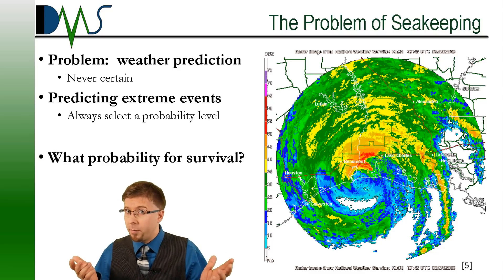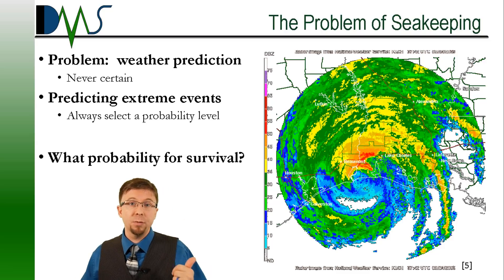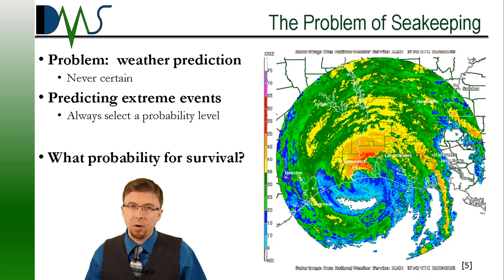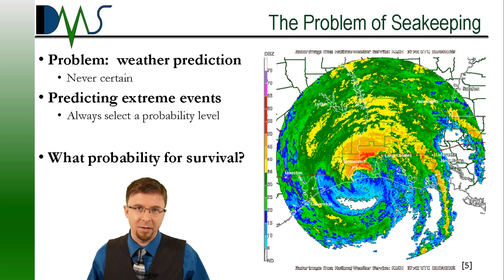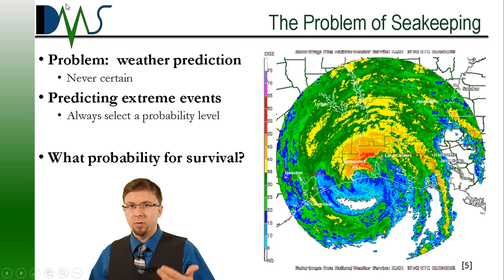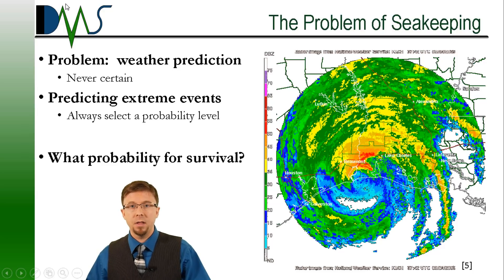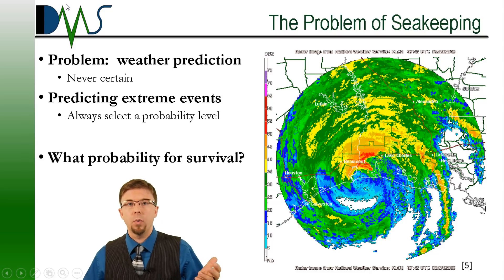All seakeeping models required us to select a probability level when predicting the weather. Which probability do you pick? Do you want a 10% chance that the ship will sink? 2%? How lucky do you feel? Well, that's just not going to work. We cannot approach the safety of the ship like a night of gambling at Vegas. Stability analysis held the potential for that certainty because it dealt with single large events and single scenarios, but it always depended on selecting the right test conditions. We needed a new way to measure stability — something that separated our analysis from the weather forecast.